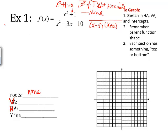And then I set each of those equal to 0. So I get x is 5, and x is negative 2. So I have two vertical asymptotes in this case.